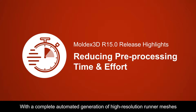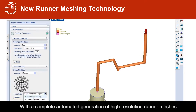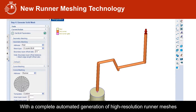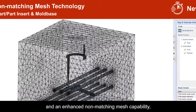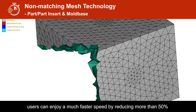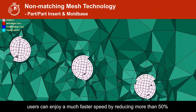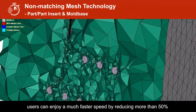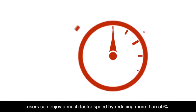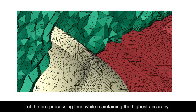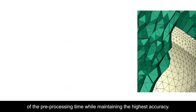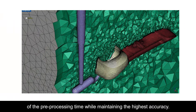With a complete automated generation of high resolution runner meshes and an enhanced non-matching mesh capability, users can enjoy a much faster speed by reducing more than 50% of the pre-processing time while maintaining the highest accuracy.